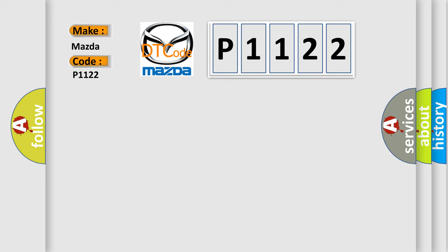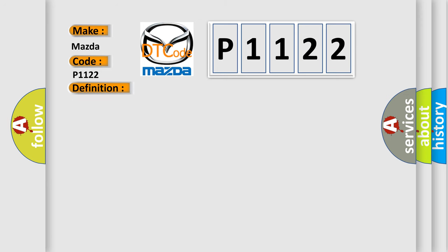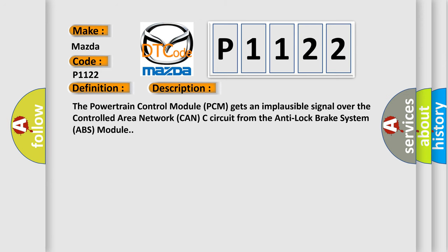Mazda car manufacturer. The basic definition is wheel speed signal right front rationality. And now this is a short description of this DTC code. The powertrain control module PCM gets an implausible signal over the controlled area network CAN-C circuit from the anti-lock brake system ABS module.